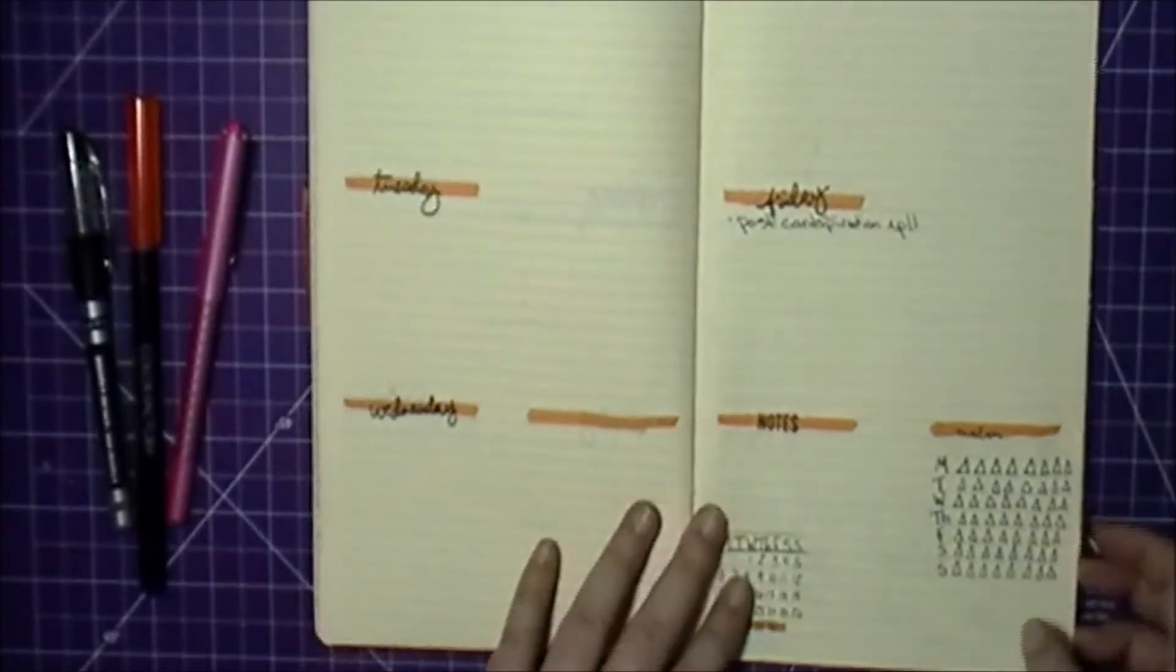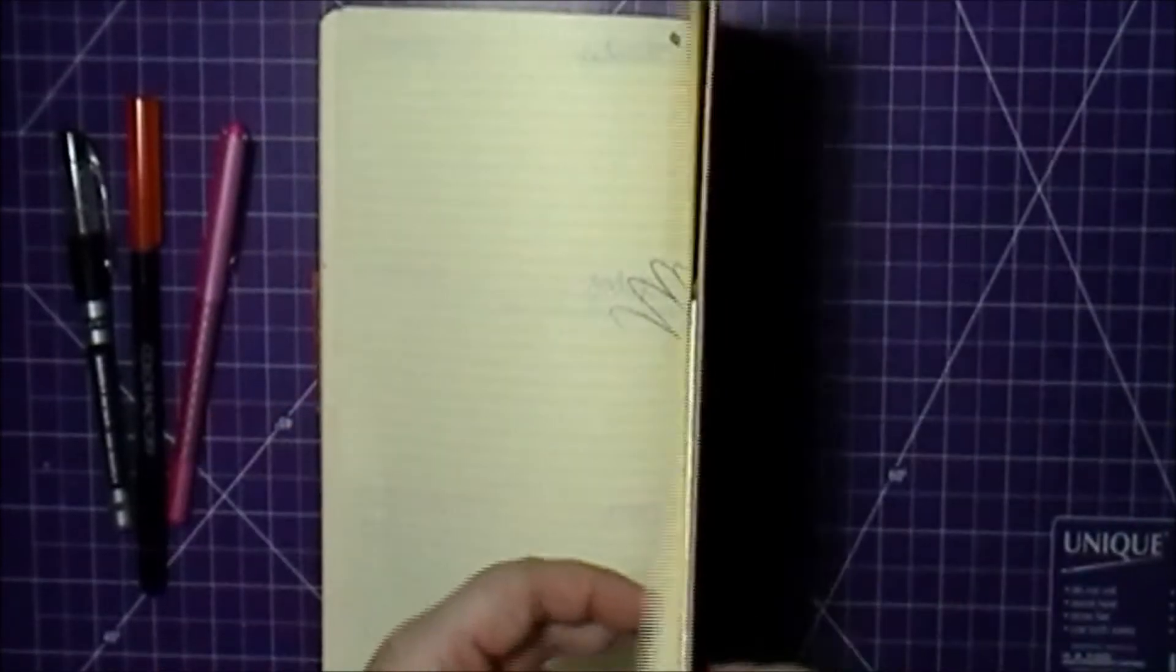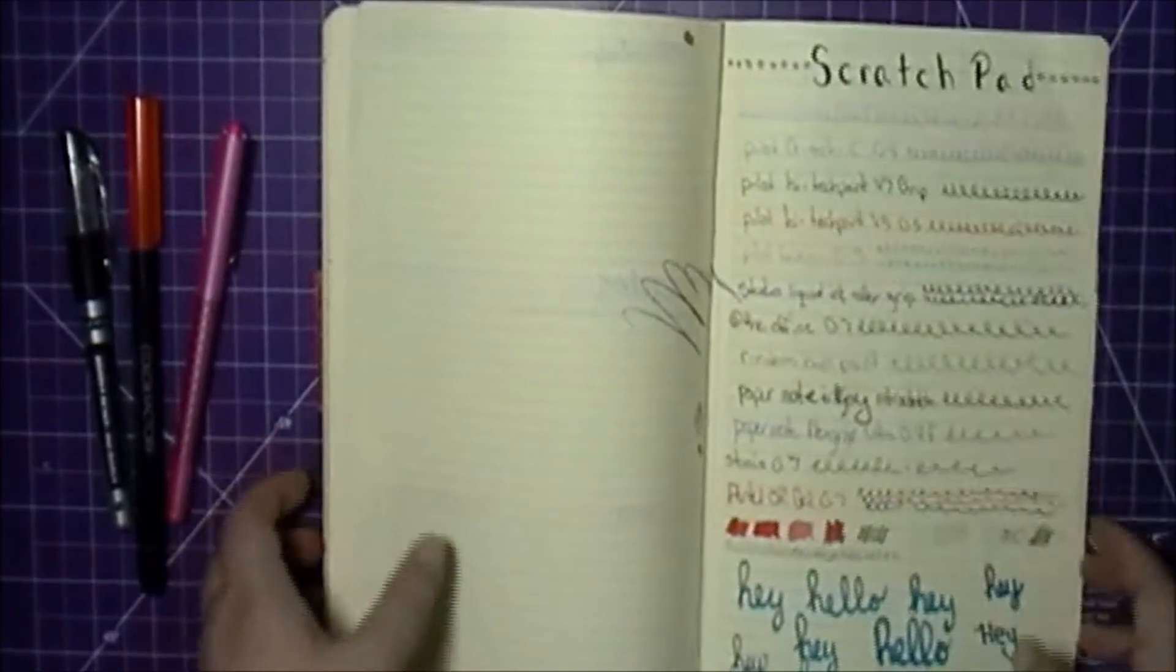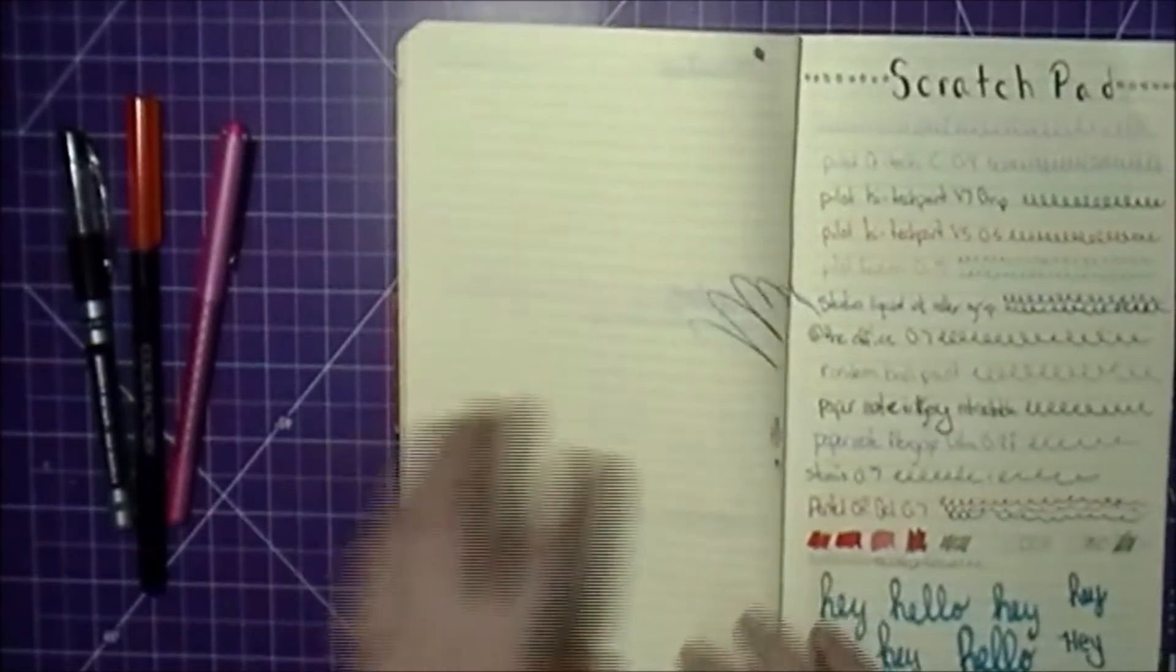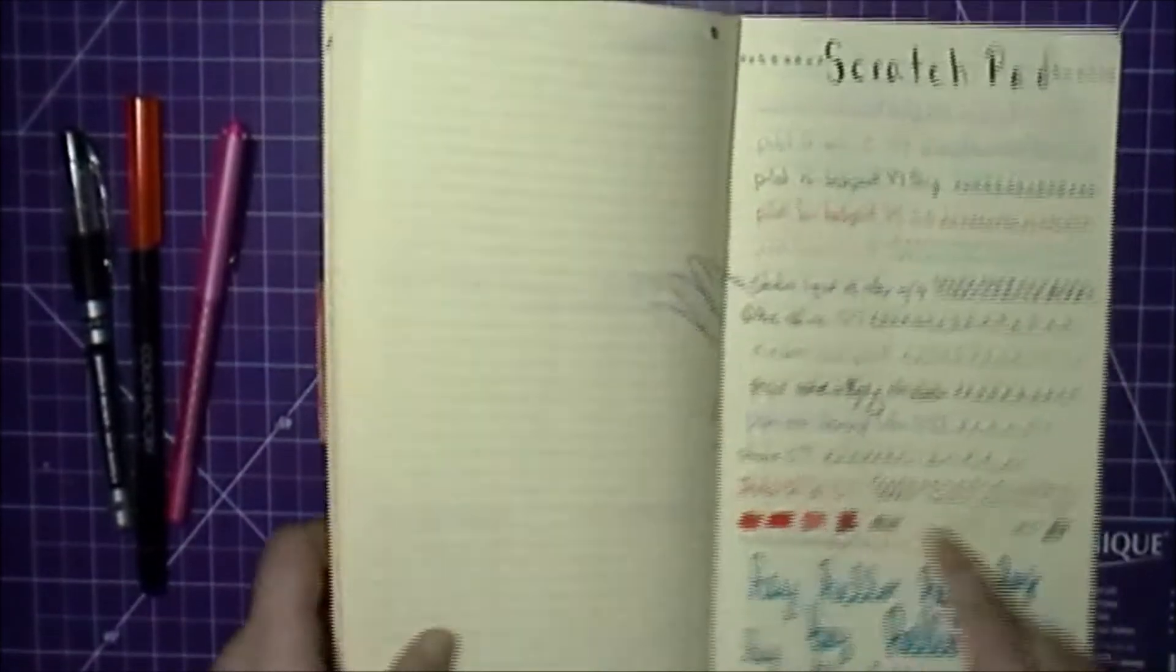And then I also have a little calendar. That is the end of my journal. I just have this page which I'll probably do some doodles or some more scratch pad.